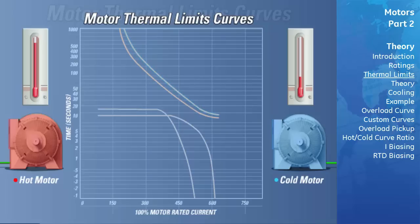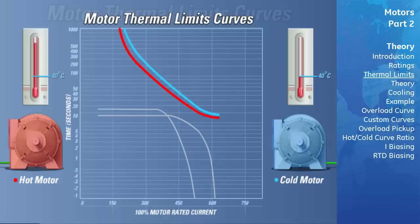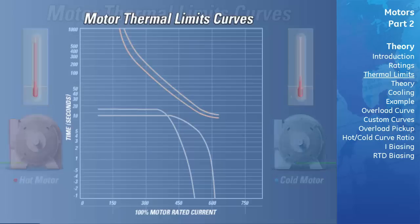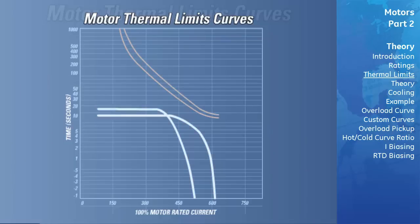The cold thermal limit curve indicates the amount of overload current that the motor can withstand before damage will occur when the motor is cold, at the ambient design temperature, which is normally no greater than 40 degrees Celsius. The hot thermal limit curve indicates the amount of overload current the motor can withstand before damage occurs when the motor is hot, meaning it has been running at rated full load current long enough that its temperature has risen to its rated temperature above the ambient temperature of 40 degrees Celsius.